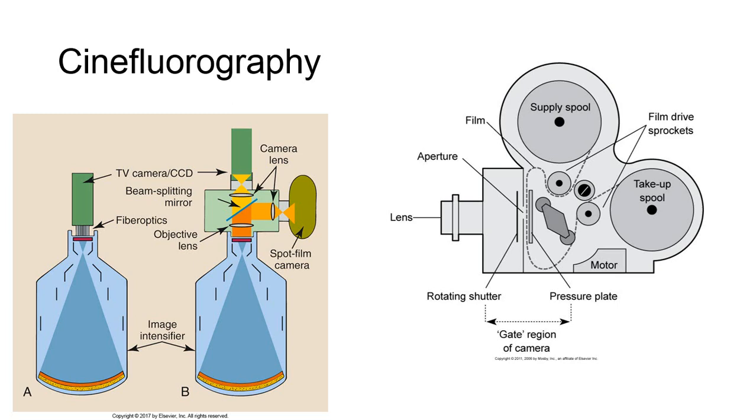Using this method, a cinegraphic recording of the fluoroscopic image occurs at the same time you're able to view the live fluoro image on the TV monitor. Its major applications have been primarily in cardiac cath lab and interventional radiography, for which 16mm or 35mm film is typically used, though 70mm film is also available.